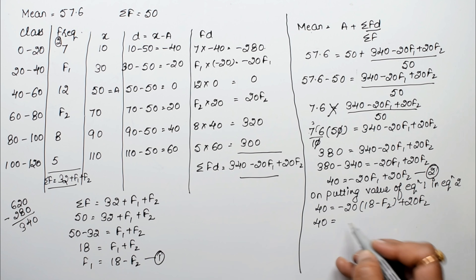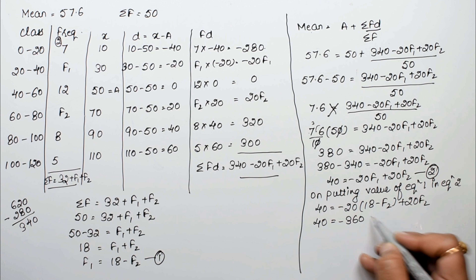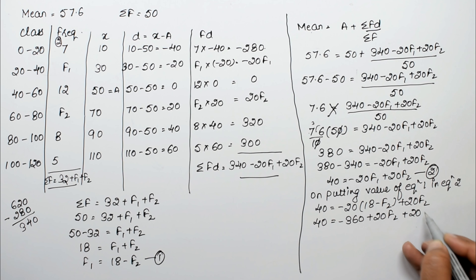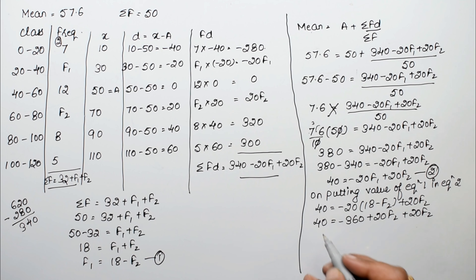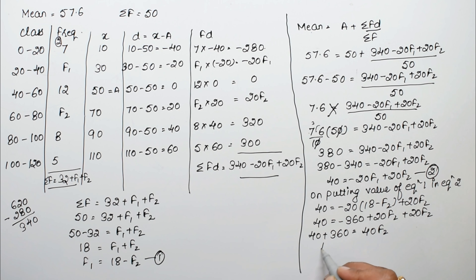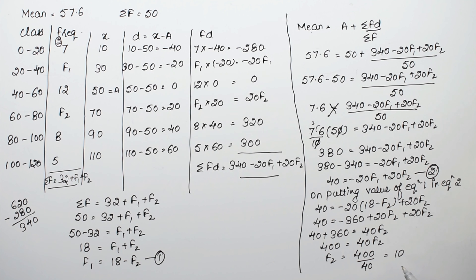Continuing: 380 minus 340 plus 360 equals 40f2, so 40 plus 360 equals 40f2, giving 400 equals 40f2. Therefore f2 equals 400 divided by 40, which is 10. So f2 equals 10.